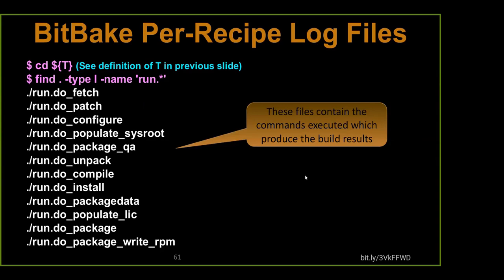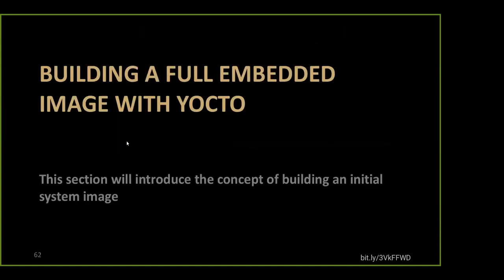Now that we've gone ahead and debugged things, we're going to talk about how do we build a full image. There are a number of different ways to do that. Some of them are predefined for you. Some of them are things you might want to do yourself — to add, extend, and customize your image. Generally speaking, we don't say we're going to remove anything; we generally say we're going to add things. It's not easy to do removes, much easier to do adds.